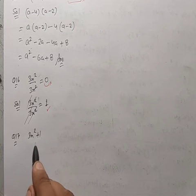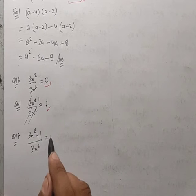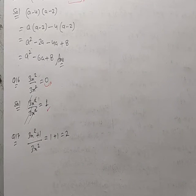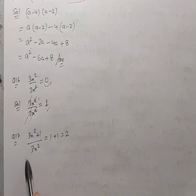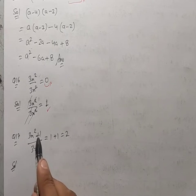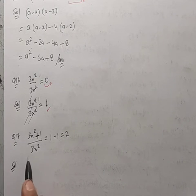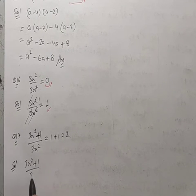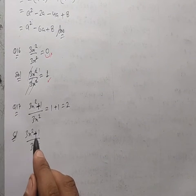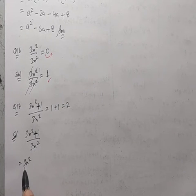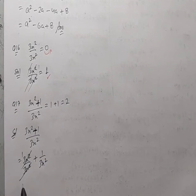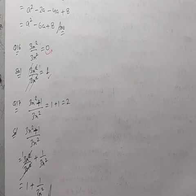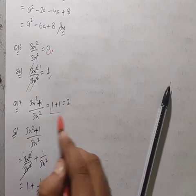Question 17: (3x²+1)/3x² = 1+1 = 2 is given. Children mistakenly cancel 3x² from the numerator directly. The correct approach: split into (3x²/3x²)+(1/3x²) = 1+1/(3x²). The correct answer is 1+1/(3x²), not 2.